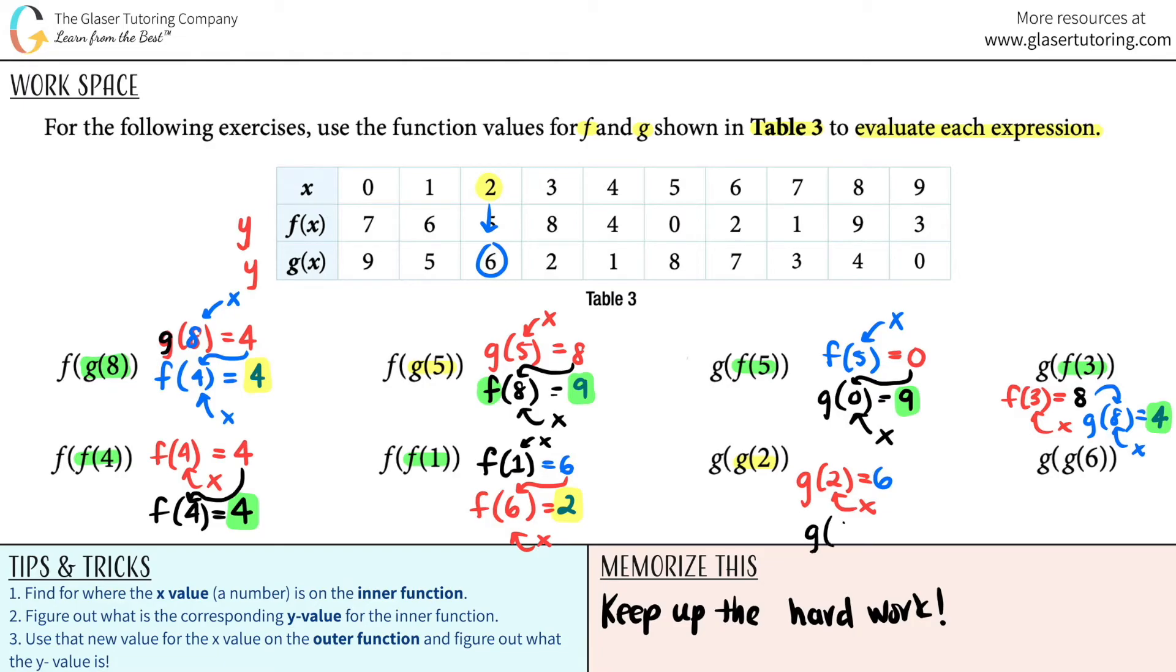Now we're doing the outer function. It also was a g, but you're plugging in your answer from before. That is your new x value. 6 on the x. We got to go down to a g. That's 7. And that is your answer.